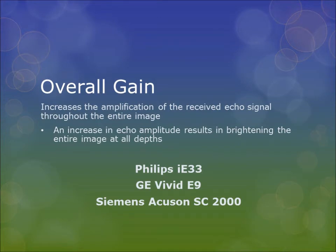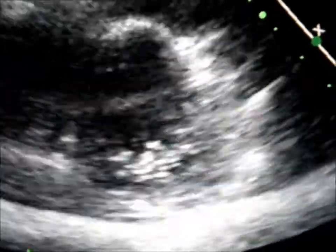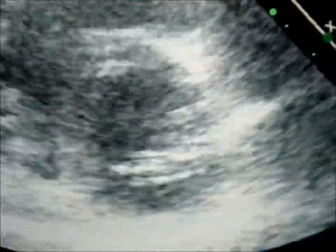Overall gain increases the amplification of the received echo signal throughout the entire image. An increase in echo amplitude results in brightening the entire image at all depths. The machines used include the Philips IE33, the GE Vivid E9, and the Siemens AccuSone SC2000. Pay attention to this image of the mitral valve — as the overall gain is decreased, the mitral valve becomes very hypoechoic, blocking out the image entirely. As the overall gain is increased, the mitral valve becomes very hyperechoic, creating a snowball effect.